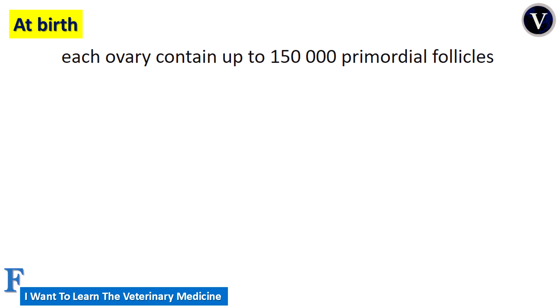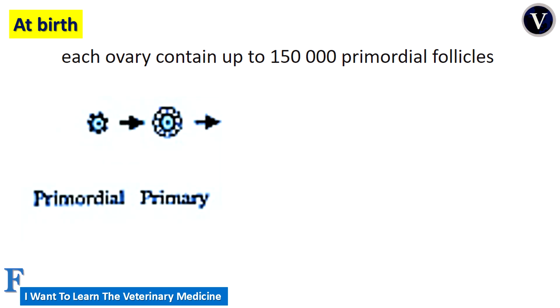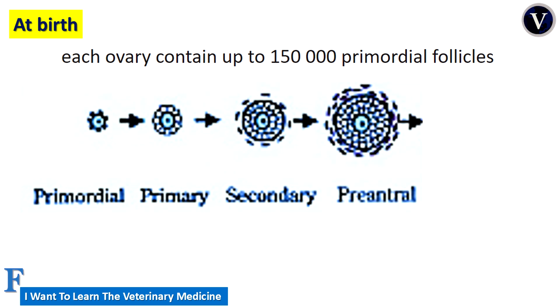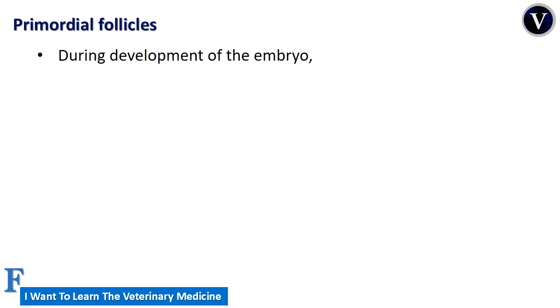Primordial follicles will develop into primary, then secondary, then pre-antral follicles. But before discussing the development of follicles, we must explain the history and meaning of the primordial follicle — we must understand the function and role of the primordial follicle and where it comes from during embryonic development.